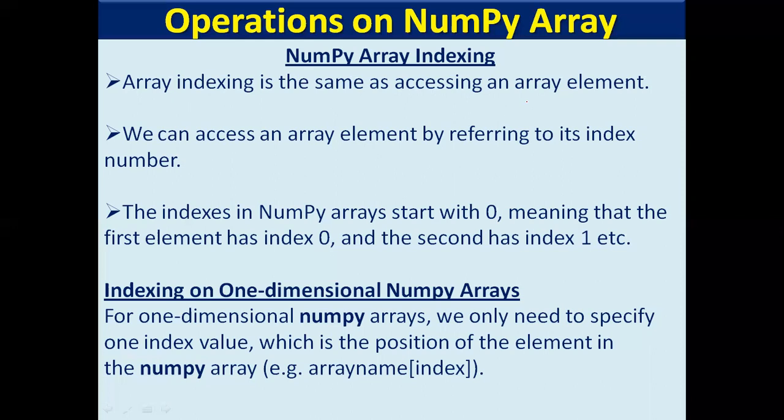For a one-dimensional NumPy array, which happens to be a single row or single column, we only need to specify one index value, which is the position of the element in the NumPy array. The syntax is simply the array name followed by the index value in square brackets. Now we will understand this with the help of an example.